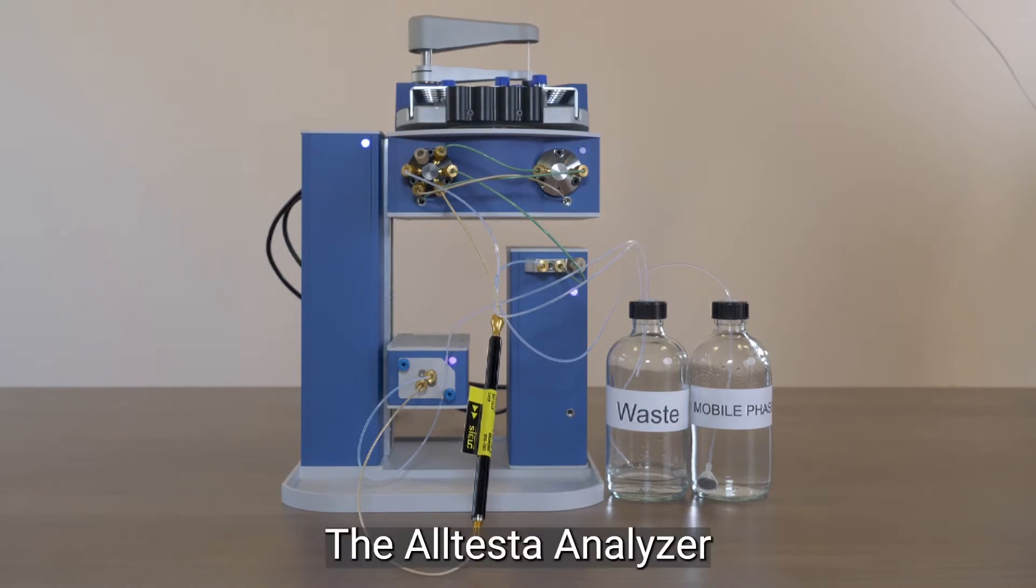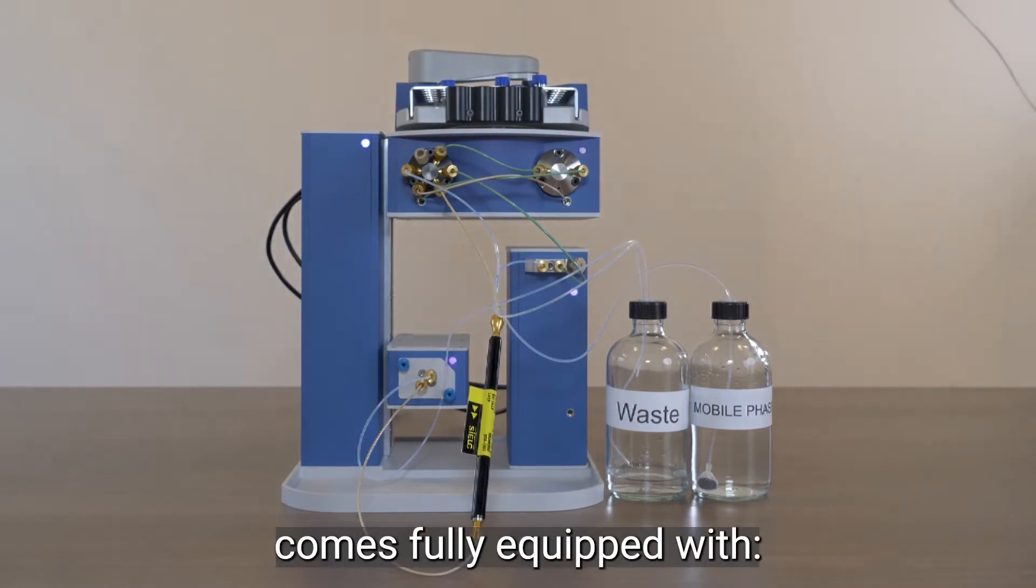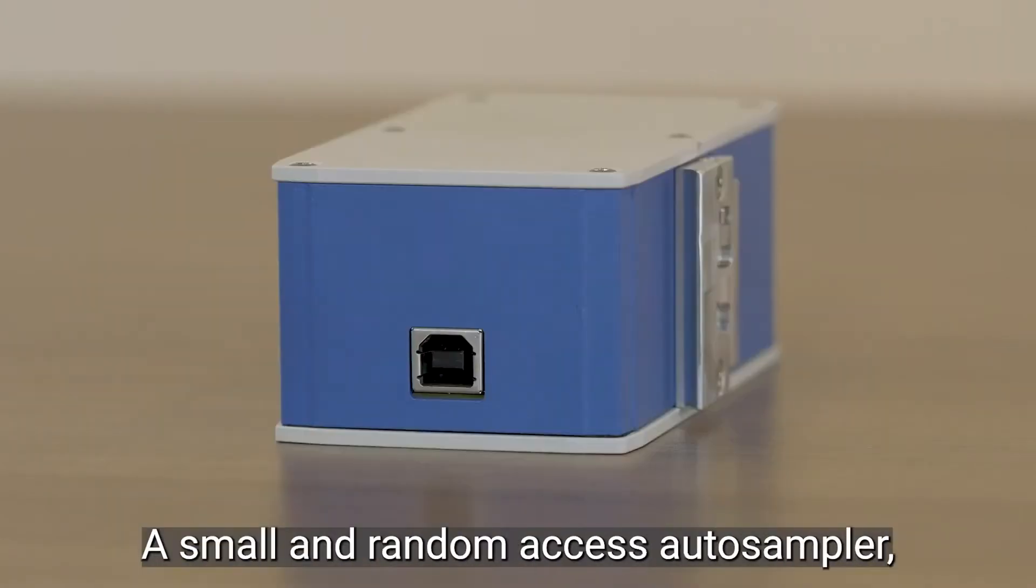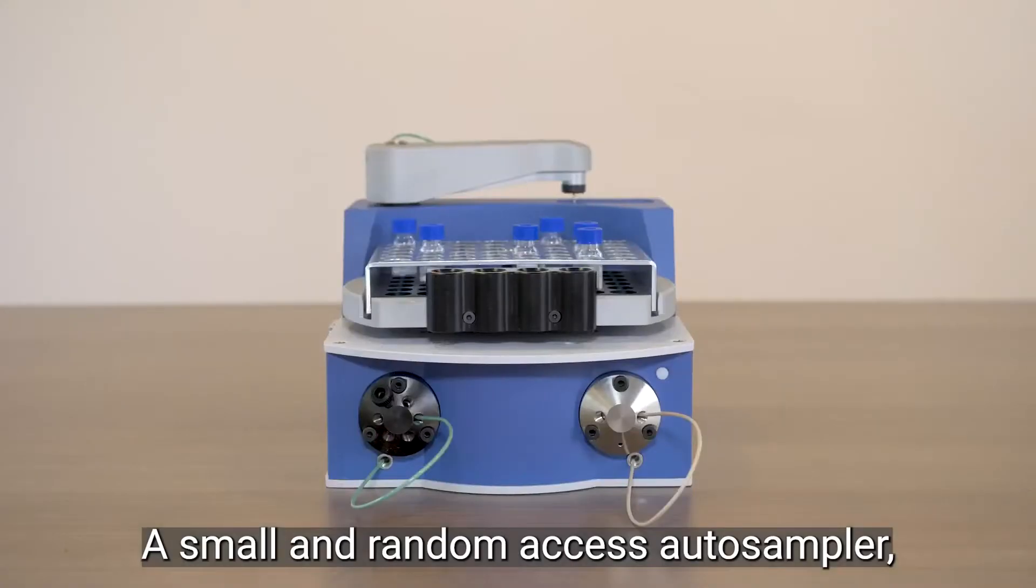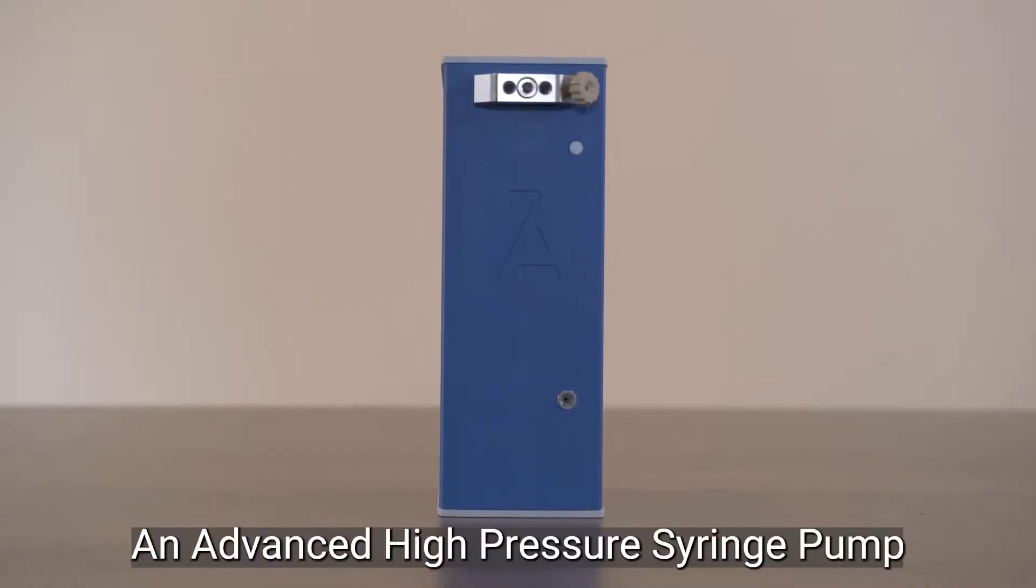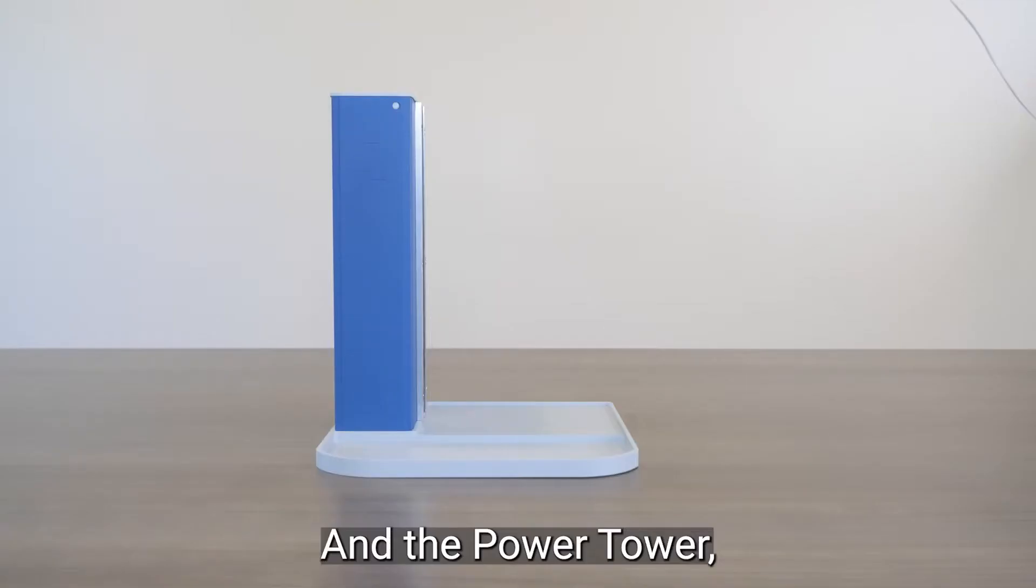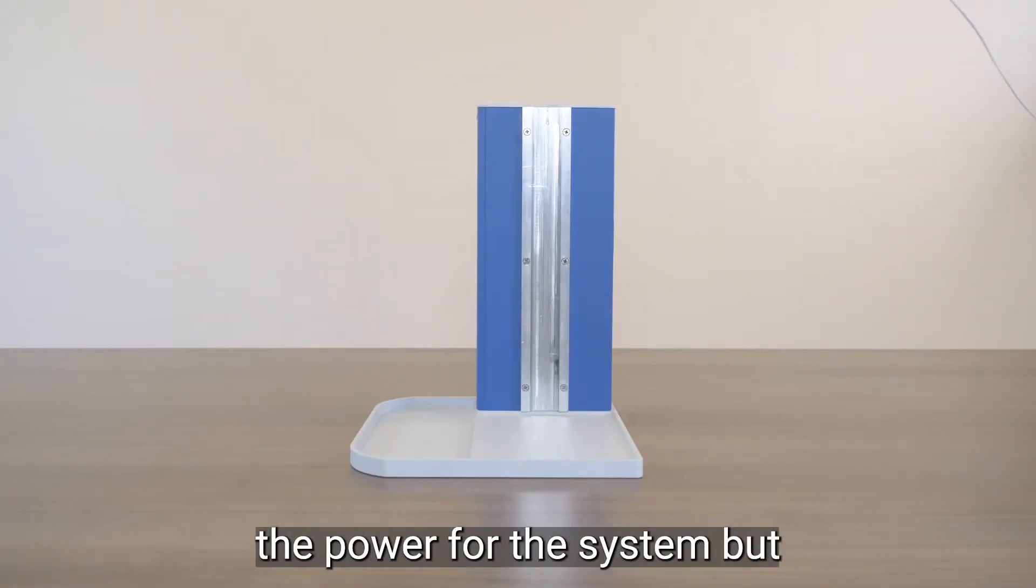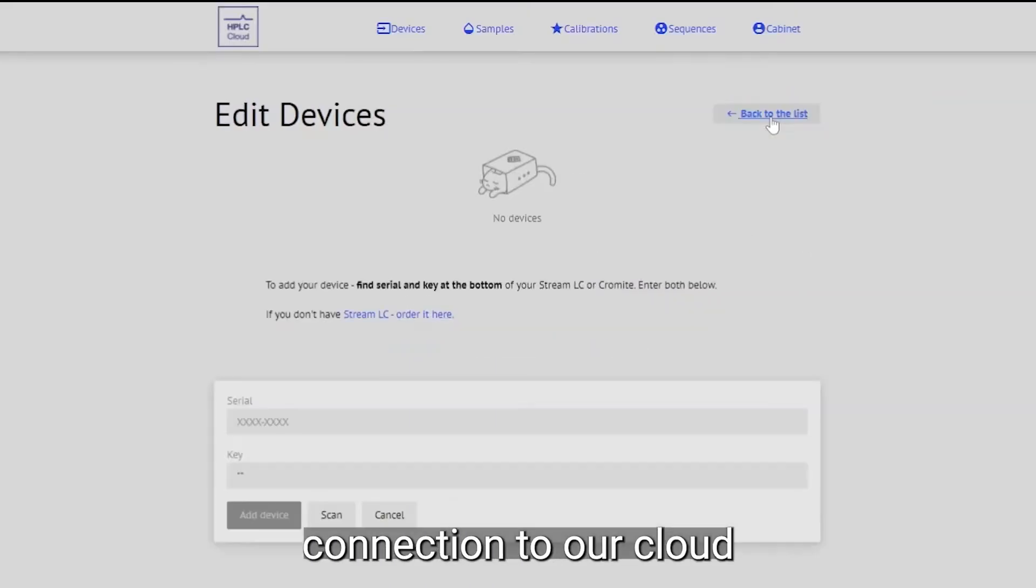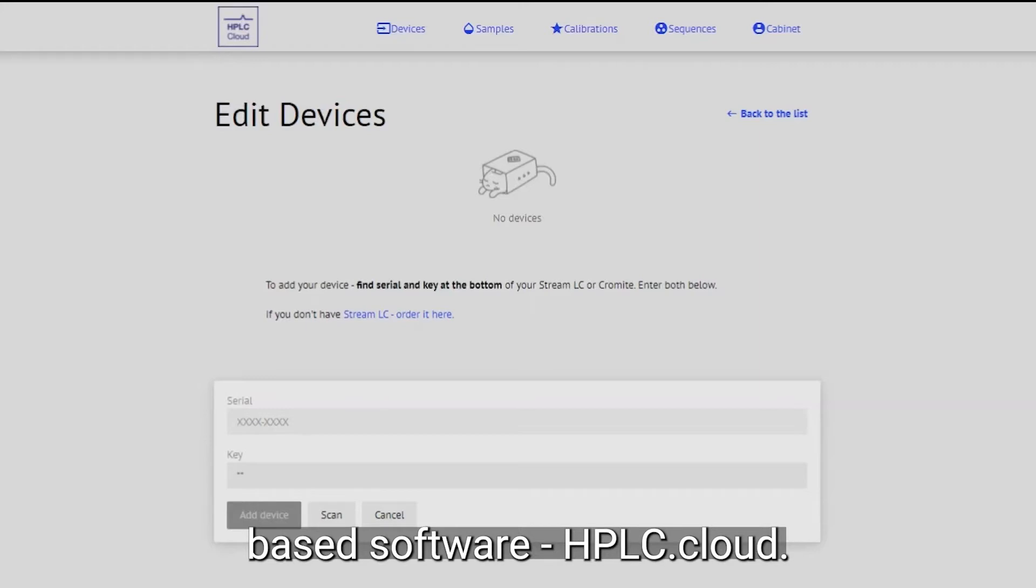The Altesta Analyzer comes fully equipped with a UV-VIS multi-wavelength detector, a small and random-axis auto-sampler which contains its own valve and syringe on the front, an advanced high-pressure syringe pump, and the power tower, which not only supplies power for the system but also contains our StreamLC, which allows for connection to our cloud-based software, HPLC.cloud.